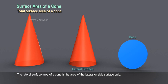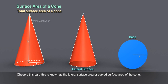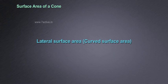The lateral surface area of a cone is the area of the lateral or side surface only. Observe this part. This is known as the lateral surface area or curved surface area of the cone.